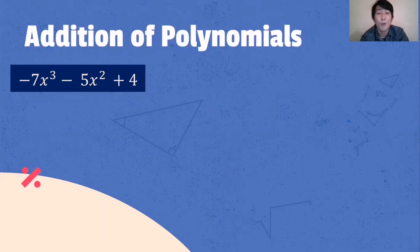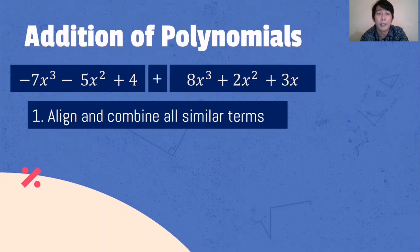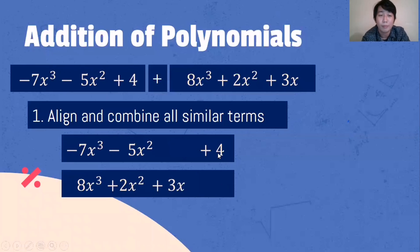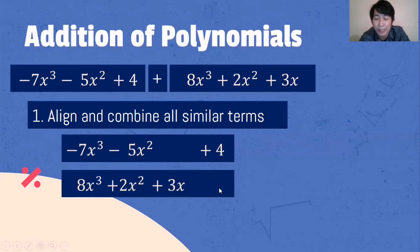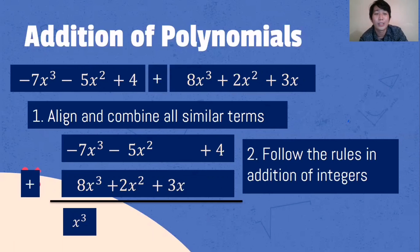Next example: negative 7x cubed minus 5x squared plus 4, plus 8x cubed plus 2x squared plus 3x. Again, align and combine all similar terms. That is negative 7x cubed, negative 5x squared — we don't have a value for x so I put a space — then plus 4. On the second polynomial we have 8x cubed plus 2x squared, and since we have a value for x we align it, then we put a space because there's no constant.